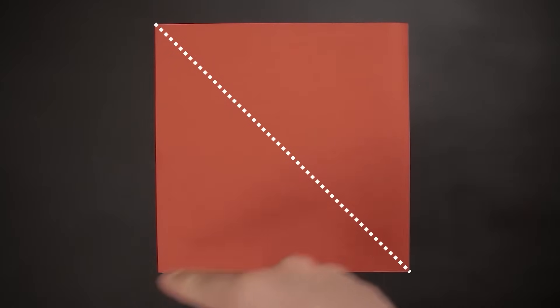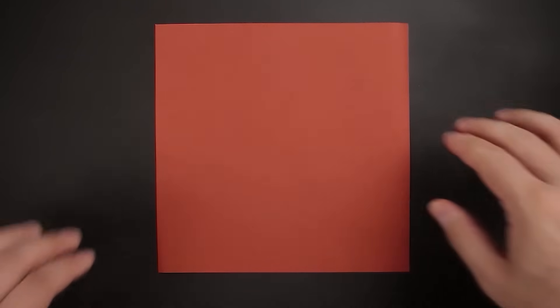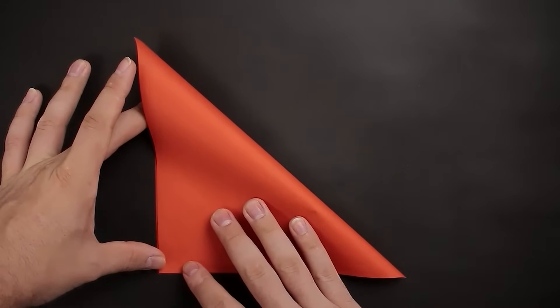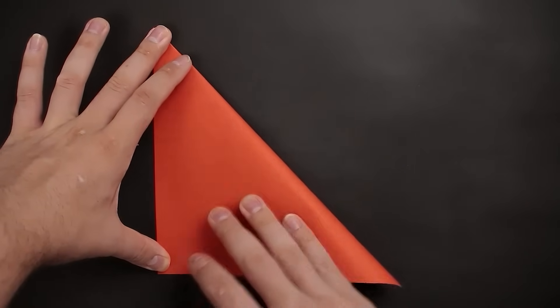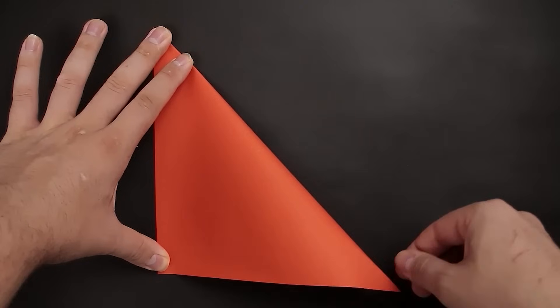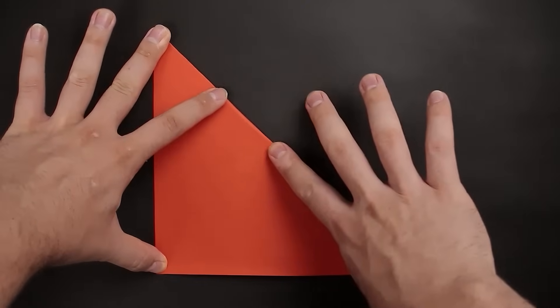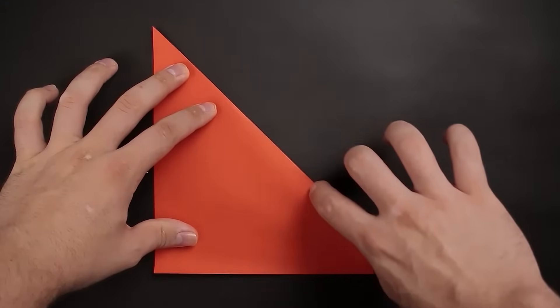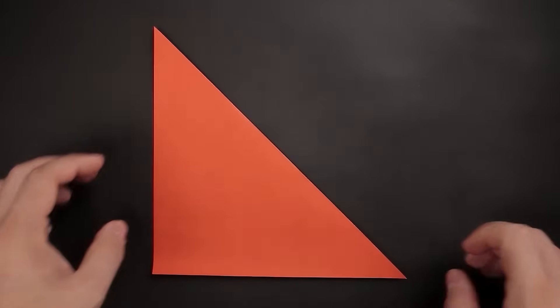And our first step is to fold the paper in half along both diagonals. To do this, just bring one corner to the other and crease sharply. Now unfold,